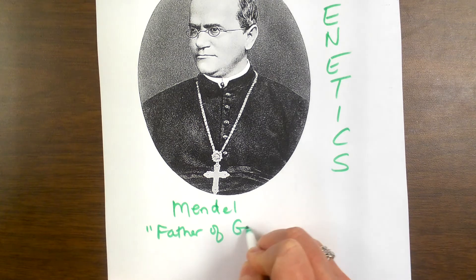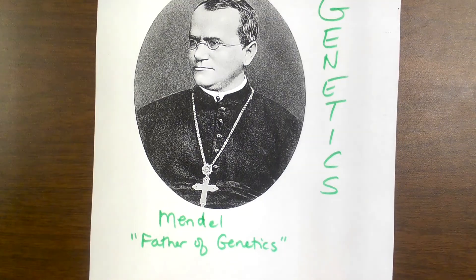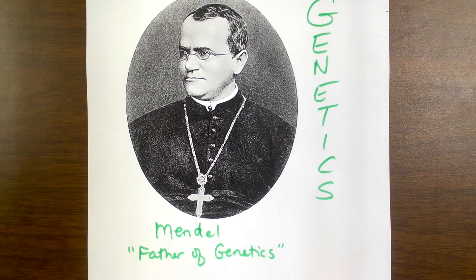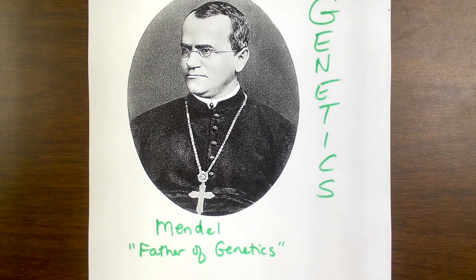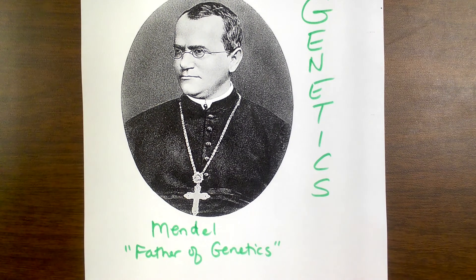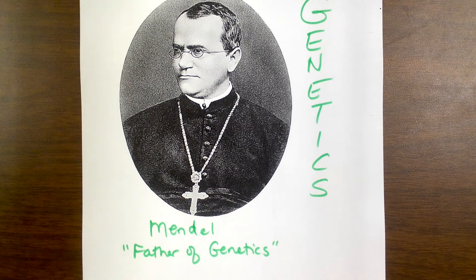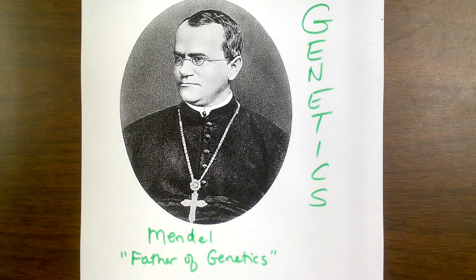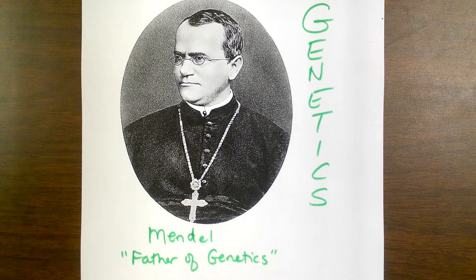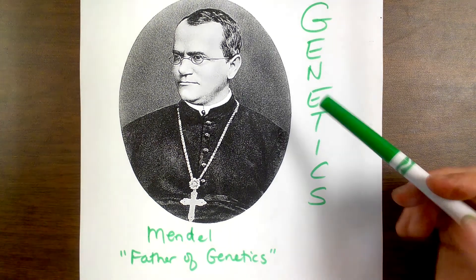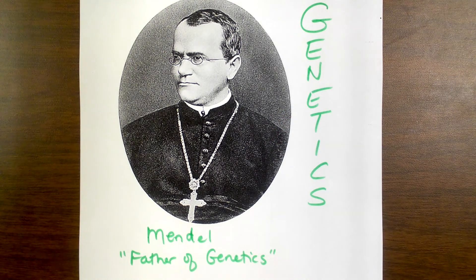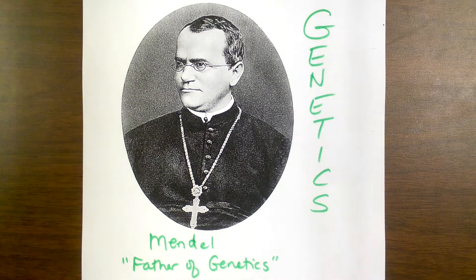His discoveries were accidental but were based on him being very observant, and that can probably be attributed to his job title. If you look at him, he was a friar — what we would consider a monk — living in an Austrian monastery. The area where he lived is now part of the Czech Republic. He spoke German, had taken a vow of silence, and was a mathematician, biologist, and meteorologist — just fascinated with science and math.